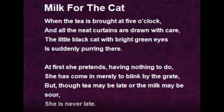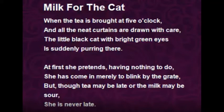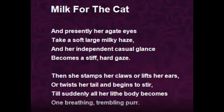The poet further explains that initially she pretends she is just paying a casual visit that has nothing to do with the milk she is given every day. The tea may be prepared late or the milk may turn sour, but the cat is never late to arrive. And presently, her agate eyes take on a soft large milky haze, and her independent casual glance becomes a stiff hard gaze.